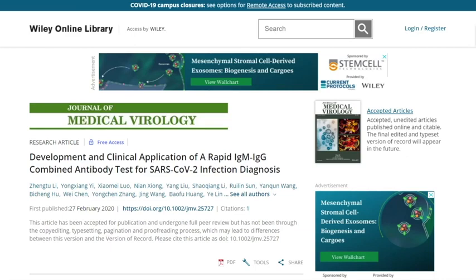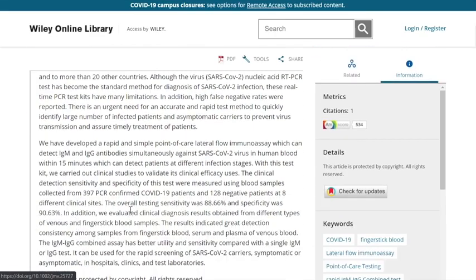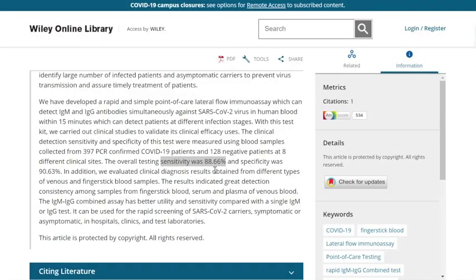This was published in the Journal of Medical Virology: the development and clinical application of a rapid IgM—remember IgM is in the acute phase and IgG in the more chronic phase—combined antibody test for SARS-CoV-2 infection diagnosis. The overall testing sensitivity was 88.66%, meaning if you had a negative test, you could be 88.66% sure it's not a false negative. Specificity was 90.63%, meaning if the test was positive, there's a 90.63% chance of it being a true positive. High sensitivity means if it's negative you can rule out. High specificity means if it's positive you can rule in. In both cases here, we've got good results.